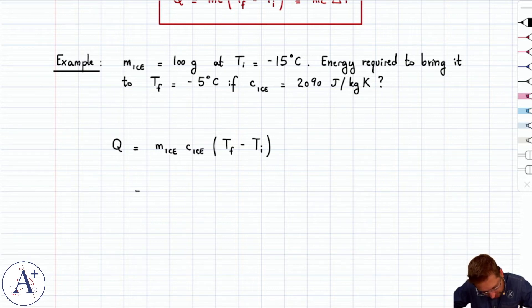So it's m ice, which is 100 grams. Now careful, we need kilograms, so that's 0.1, times specific heat, 2,090, times T final, which is minus 5, minus, careful, double minus, because initial temperature is negative 15.